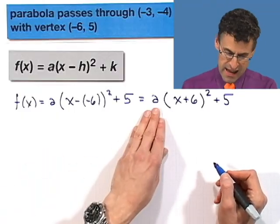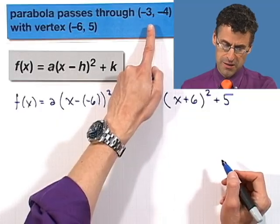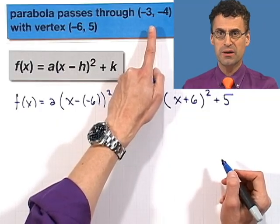If we could just find a, then we're done, because then we'd have the formula. Well, we haven't used the fact that the parabola passes through the point negative 3 comma negative 4.